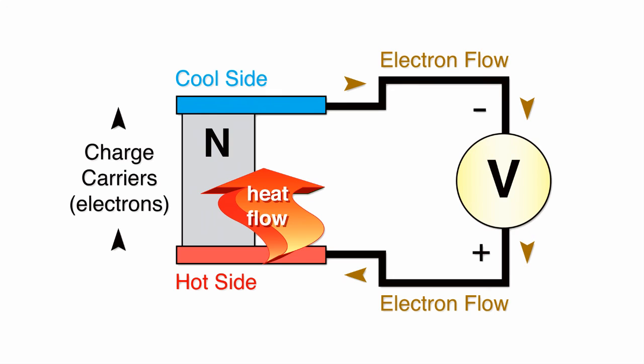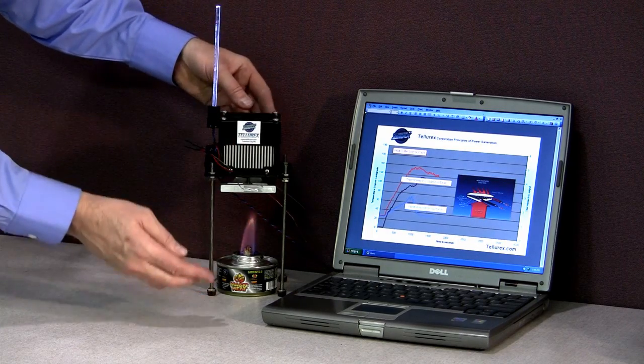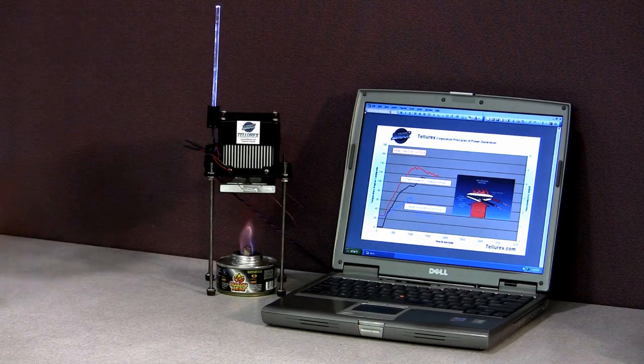The heat passing through the conductors causes electrons to flow through the completed electrical circuit, which includes the fan that dissipates the heat and this light emitting diode that illuminates the light pipe.